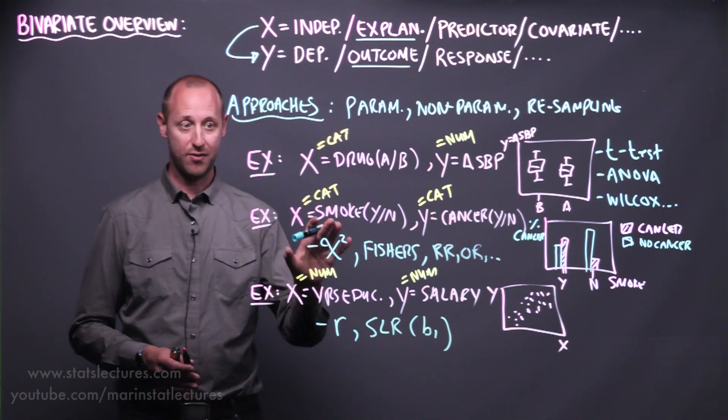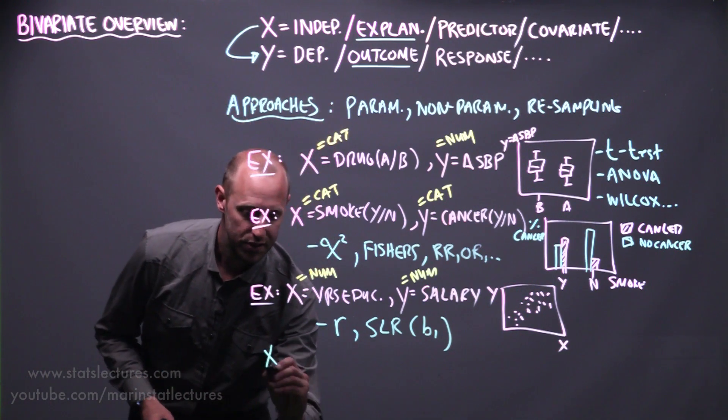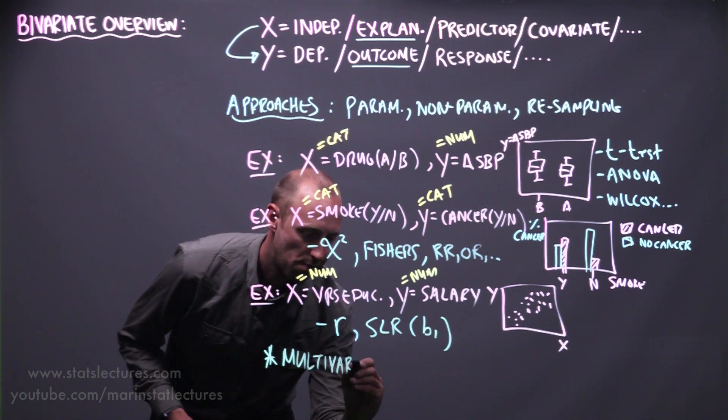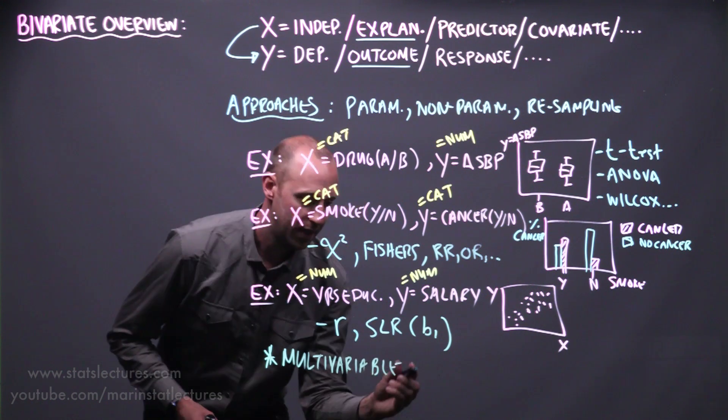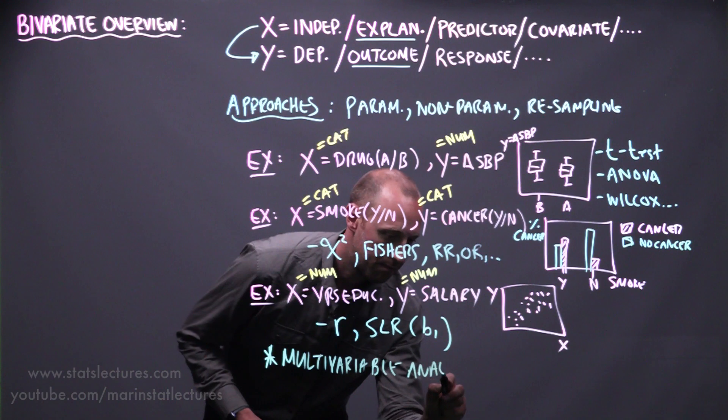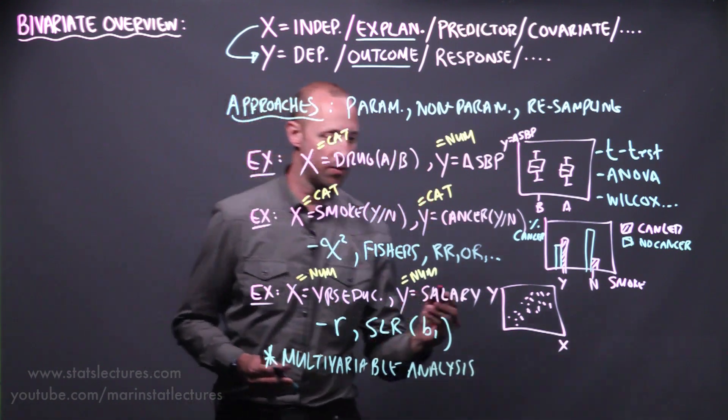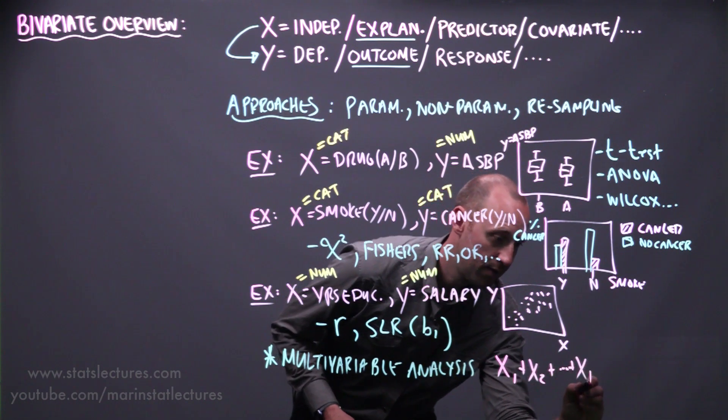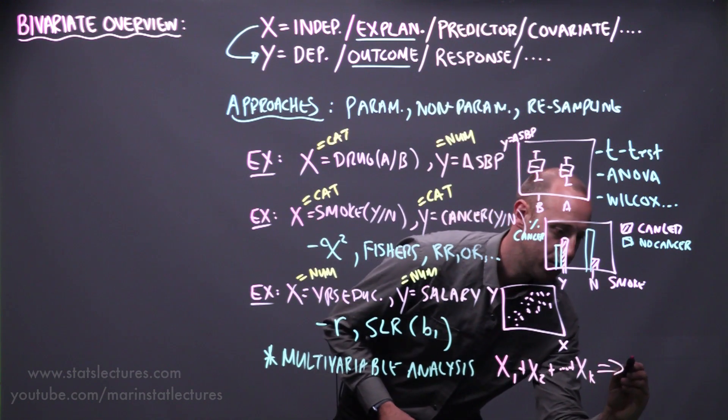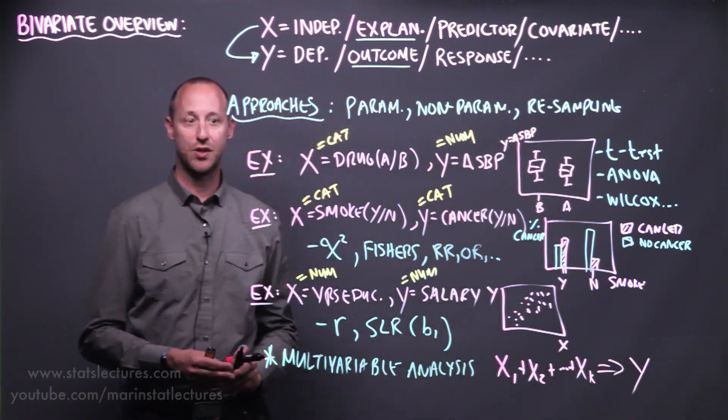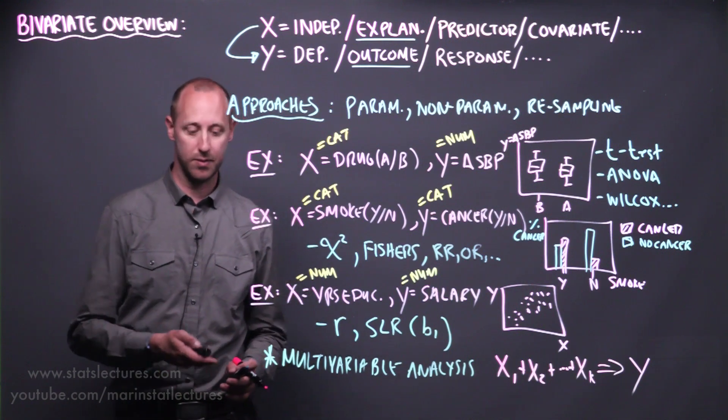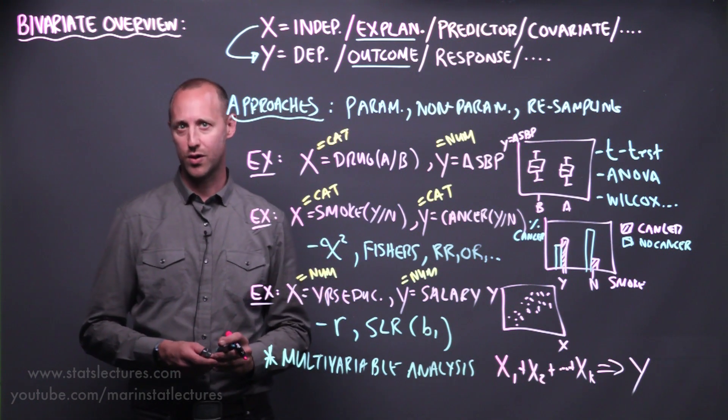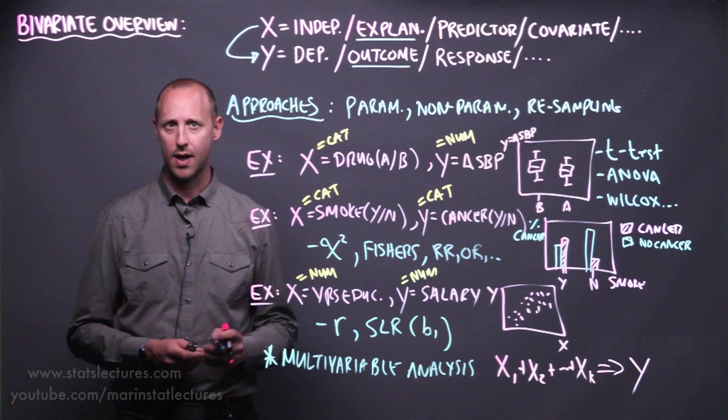Usually what happens after running through bivariate analysis is starting to acknowledge multivariable analysis. And again this is where we're looking at what effect does x1, x2, up to xk, multiple x variables, what effect do those have on some outcome. And we start to model y as a function of multiple x variables. This usually takes place towards the end of an intro stats course or in a second course on generalized linear models or regression modeling.